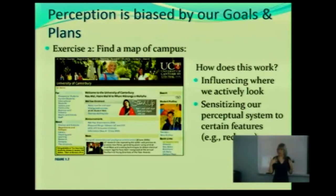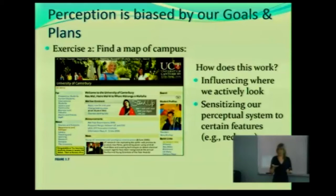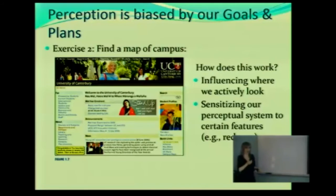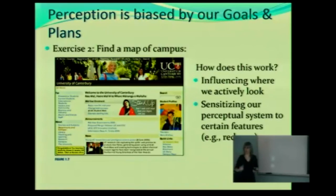We are sensitized to see certain things. So if you're on the road, you're more likely to see something like a red car as opposed to a blue car. But again, if you're on the road and you are looking for a white car, you're probably going to be focusing on those white cars. You may even have a red car drive right by you and you won't notice. Very interesting stuff.